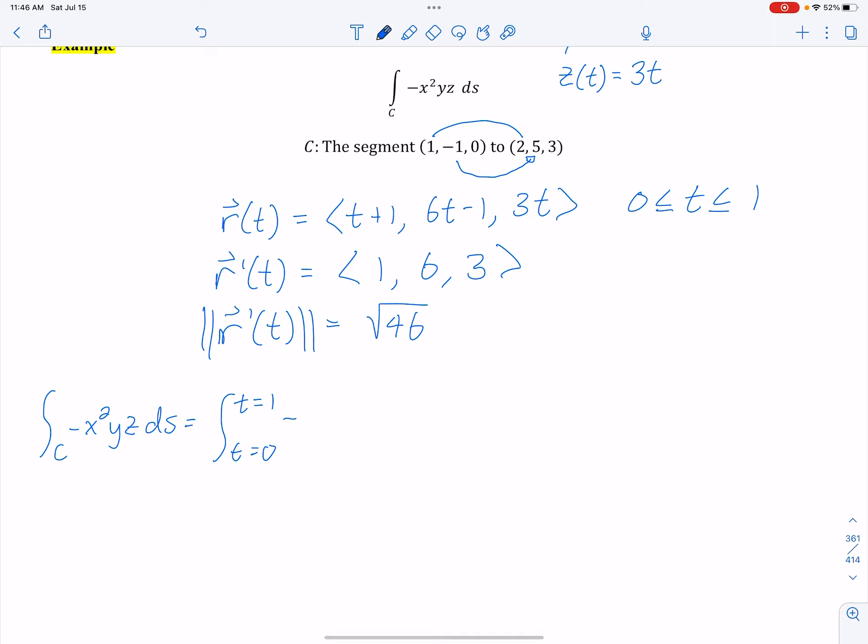And then I'm just going to replace everything. x is t plus 1 squared. Times y, which is 6t minus 1. Times z, which is 3t. Times the square root of 46. That's that magnitude, dt.